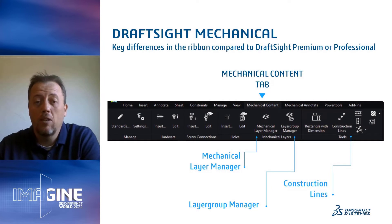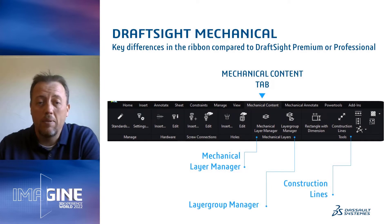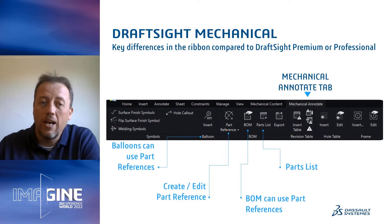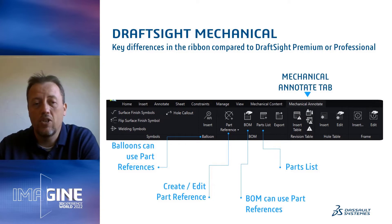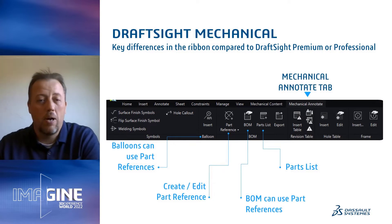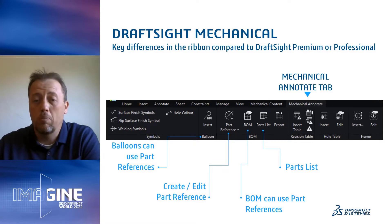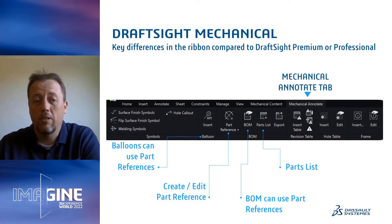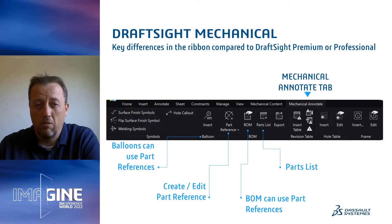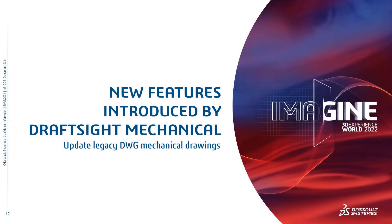Looking at the ribbon of DraftSight Mechanical, we can see two new tabs. The Mechanical Content tab introduces additional features for mechanical layers and construction lines. The Mechanical Annotate tab introduces both new and enhanced features. Key new features include the ability to create and modify part references. Unlike in other DraftSight versions, the new balloon feature can use those part references. The same is true for the BOM feature, and we can also see a new command for parts list. You'll also notice the new dark mode user interface, which is among the new features for DraftSight 2022.